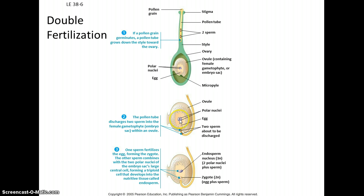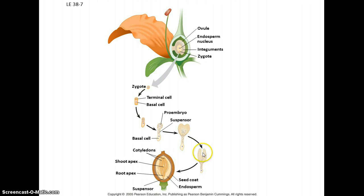The most important ones here are what are called the polar nuclei — there are two of them — and the egg. They're all haploid. In double fertilization, one of the sperm nuclei fertilizes the egg to form the zygote. The other fuses with the two polar nuclei to form a triploid structure that will develop into what's called the endosperm, which makes up the bulk of the seed and contains a lot of nutrients for the embryo when the seed germinates.